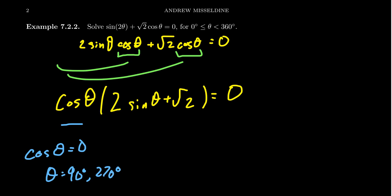What about the other one? This one takes a little bit more work. 2 sine theta plus the square root of 2 equals 0. Subtract the square root of 2, we get 2 sine theta equals negative root 2. Divide by 2, we get sine theta equals negative root 2 over 2.